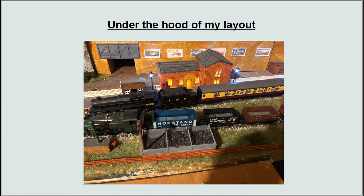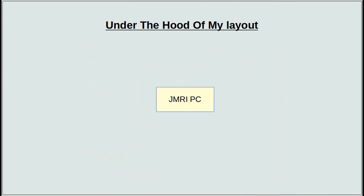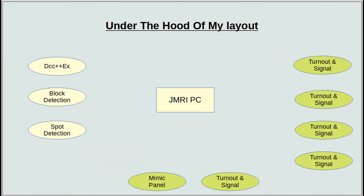In the previous video I talked about JMRI being the brains behind my layout. For this to work, JMRI needs to be able to communicate with all my devices I want to use on the layout. To do this, JMRI can use many different layout control buses. In simple terms, a layout control bus is a data cable of some form to allow the movement of data packages.